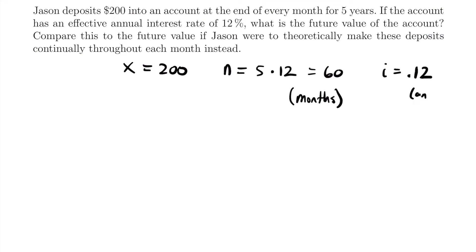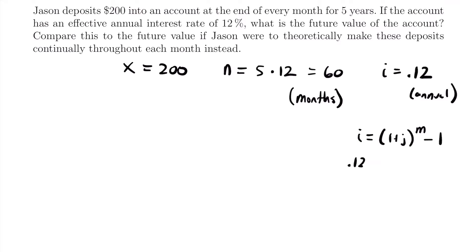That is an annual rate, so we actually have to get a different rate because we need an interest rate compounded with the same frequency as our payment cycle. Since payments of $200 are being made per month, we need a monthly effective interest rate, not an annual effective interest rate. We'll use the conversion formula: I equals (1 + J)^M minus 1, where M equals the number of times this non-annual rate occurs in a year. Since we're looking for a monthly rate, M equals 12.